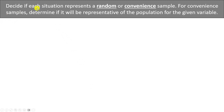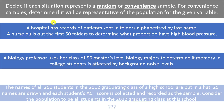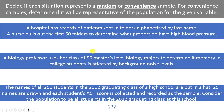Here is one for you to try. Decide if each situation below represents a random sample, a convenience sample that is representative, or a convenience sample that is not representative. So we have three choices: random; convenience and representative; or convenience and not representative. I'll give you a minute to think about these and try them out. I'll discuss the first two, and students in my class will need to submit an answer for the last one.